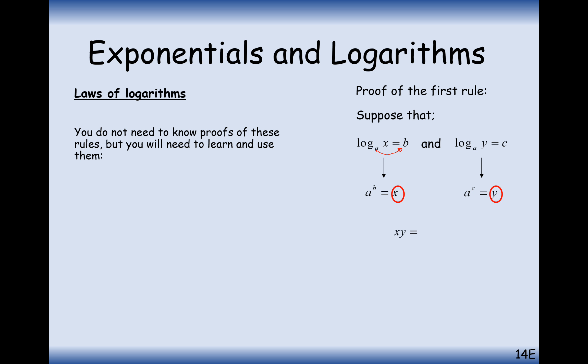Remember, if we multiply these indices together, we get A to the power of B times A to the power of C, and we add these indices together. So X times Y equals A to the power of B plus C. Now let's take log of base A from both sides to undo this power, giving log base A of XY equals B plus C.